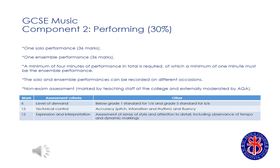For the performing component of GCSE Music, students may sing or play an instrument. Students need to perform as a soloist and as part of an ensemble for a minimum of four minutes. The final recordings will take place in school from the September of year 11. The performances are marked by the teaching staff at the college and a sample of students' work is sent to the exam board for moderation. Each performance is marked out of 36, with a mark out of 6 for the level of demand, a mark out of 15 for technical control and a further mark out of 15 for expression and interpretation.